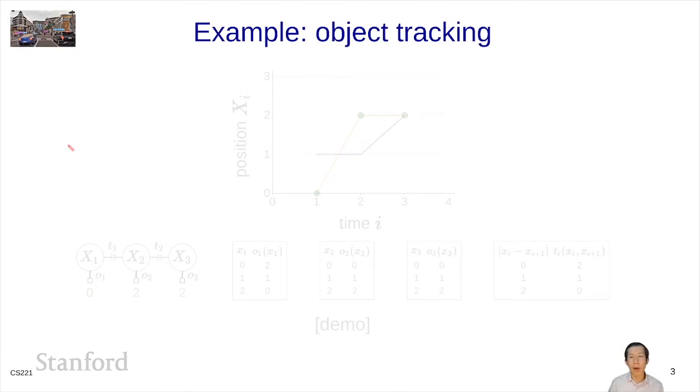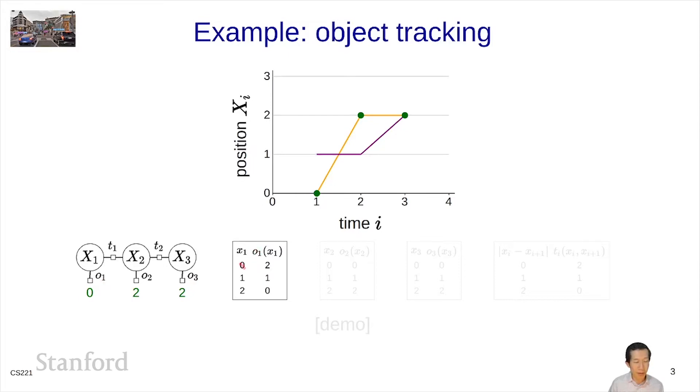Recall our running example, object tracking. At each time position you observe a noisy sensor reading of a particular object. You observe 0, 2, and 2 as the positions of the object and you're trying to figure out where this object was. We model this as a CSP where we have three observational factors, O1 which favors x1 equals 0, O2 which favors x2 equals 2, O3 which favors x3 equals 2, and we have two transition factors that favor subsequent positions being close by.